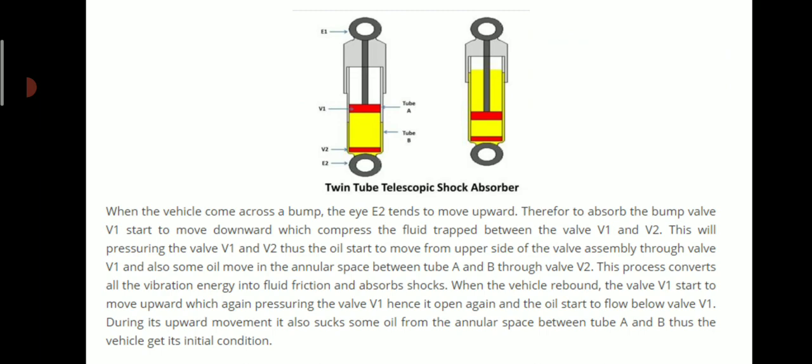When the vehicle comes across a bump, E2 tends to move upward. To absorb the bump, valve V1 starts to move downward, which compresses the fluid trapped between V1 and V2, pressurizing the valves. Oil starts to move from the upper side through valve V1, and some oil moves into the annular space between tubes A and B through valve V2. This process converts vibration energy into fluid action and absorbs the shock. When the vehicle rebounds, valve V1 starts to move upward, again pressurizing it, and oil flows below V1, also sucking some oil from the annular space, returning the vehicle to its initial condition.